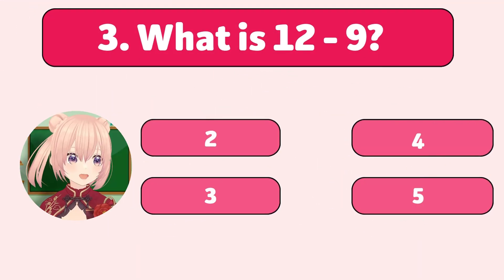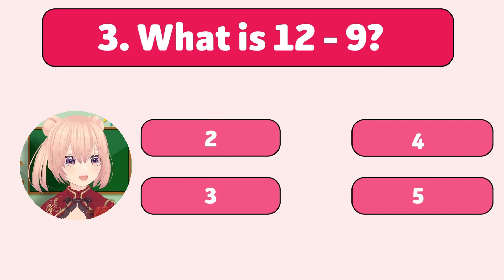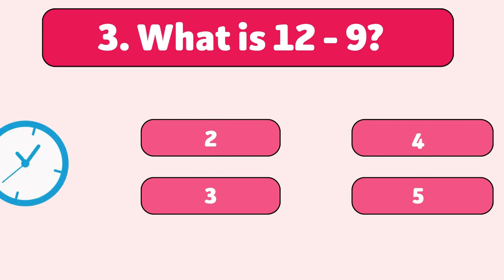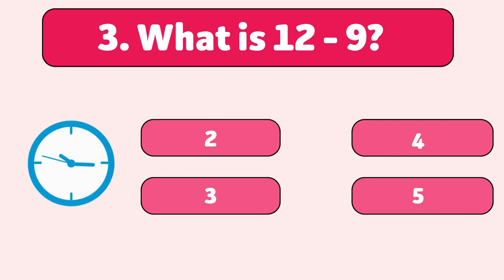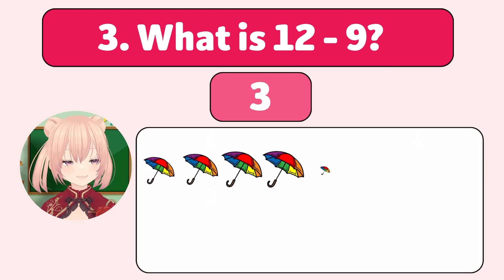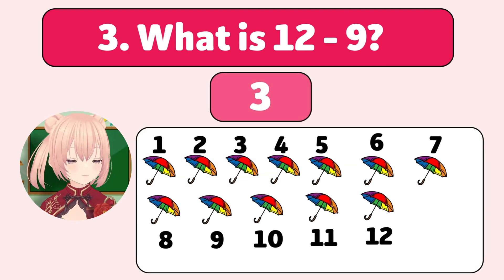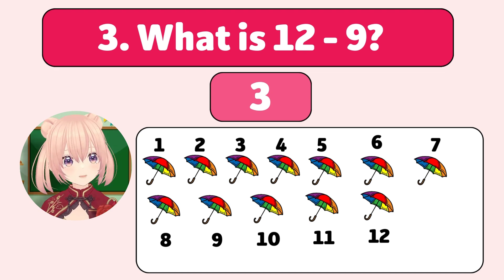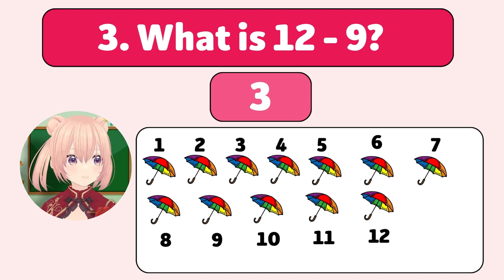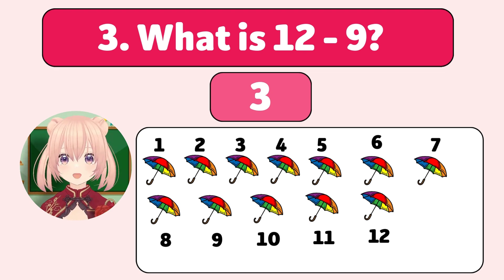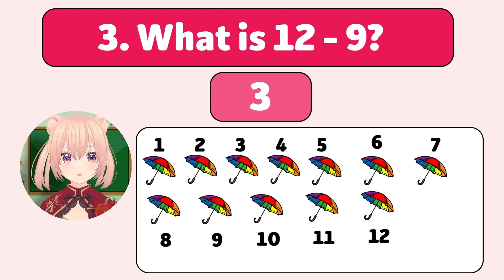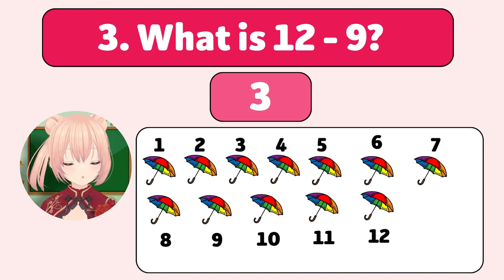What is 12 minus 9? The answer is 3! We start with 12 umbrellas and let 9 blow away. Let's count!